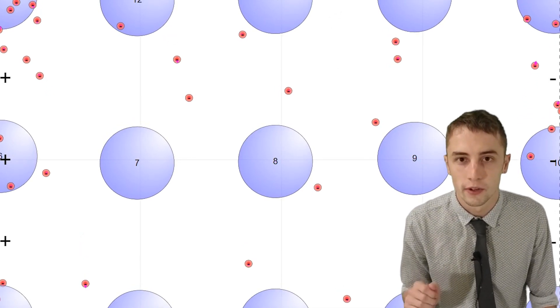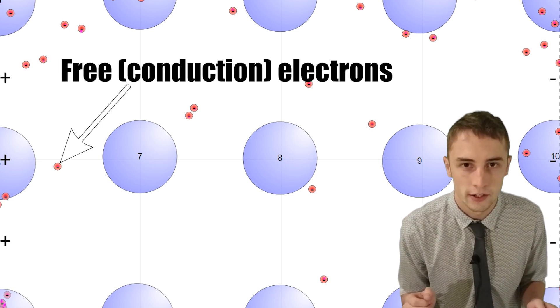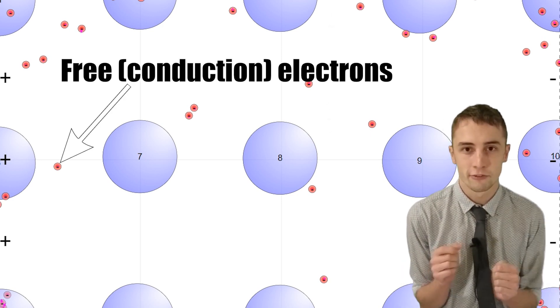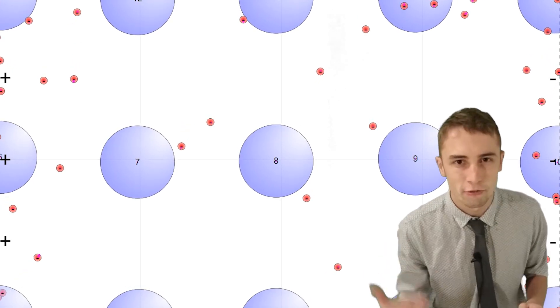Right, drift velocity then. So if you look inside a wire without any potential difference applied across it, then you will see the free electrons moving throughout the structure in random speeds, random directions.